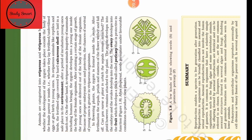In flowering plants, the zygote is formed inside the ovule after fertilization. Sepals, petals, and stamens of the flowers wither and fall off. The ovule develops into the seed and the ovary develops into the fruit, which develops a thick wall called the pericarp that is protective in function. After dispersal, seeds germinate under favorable conditions to produce new plants.